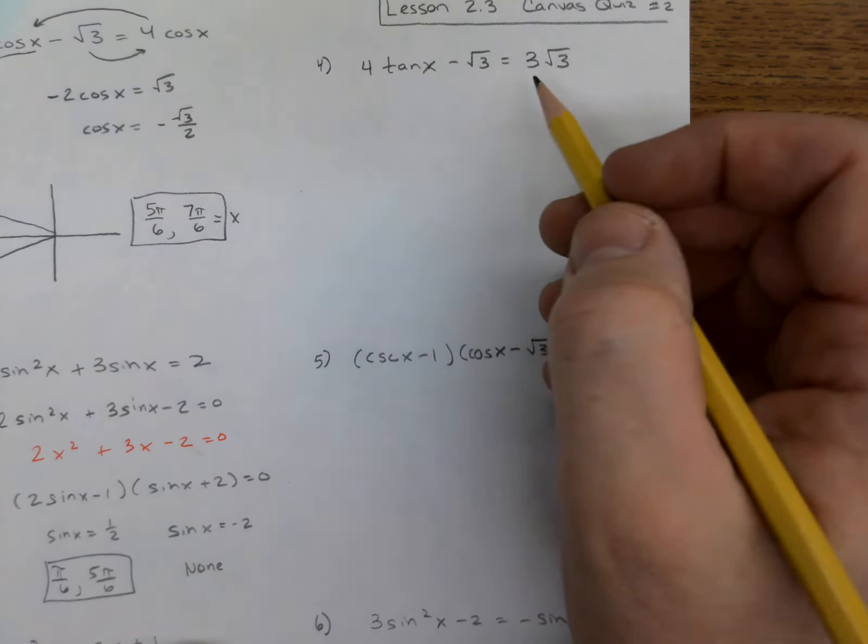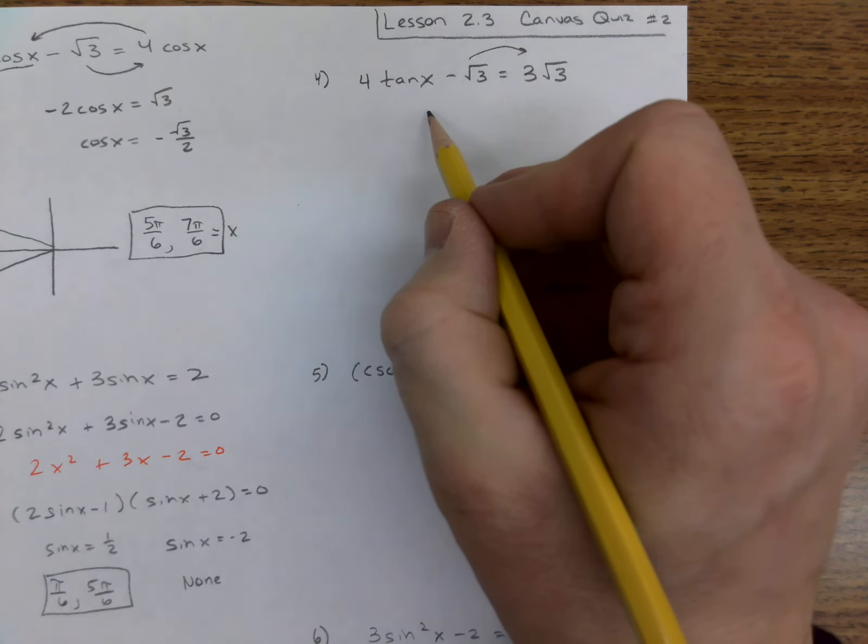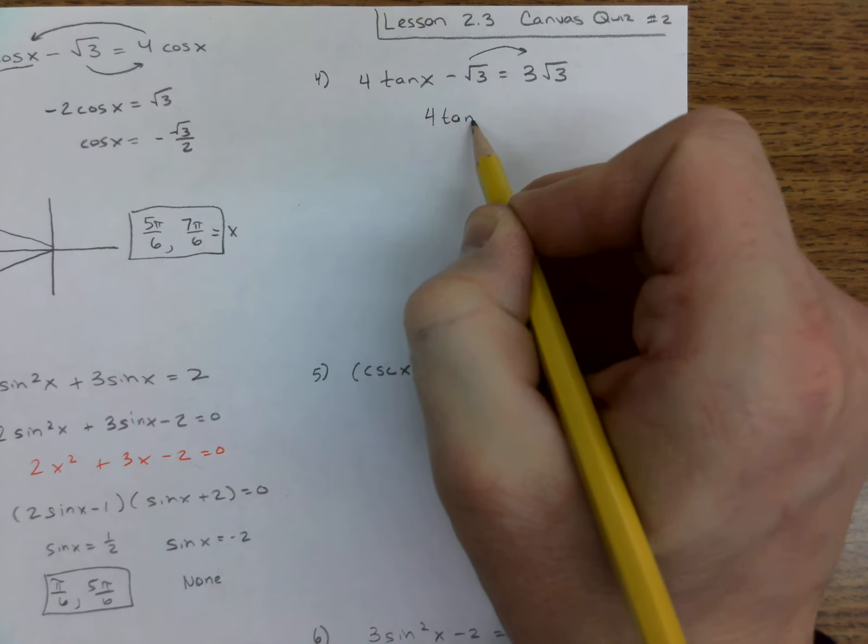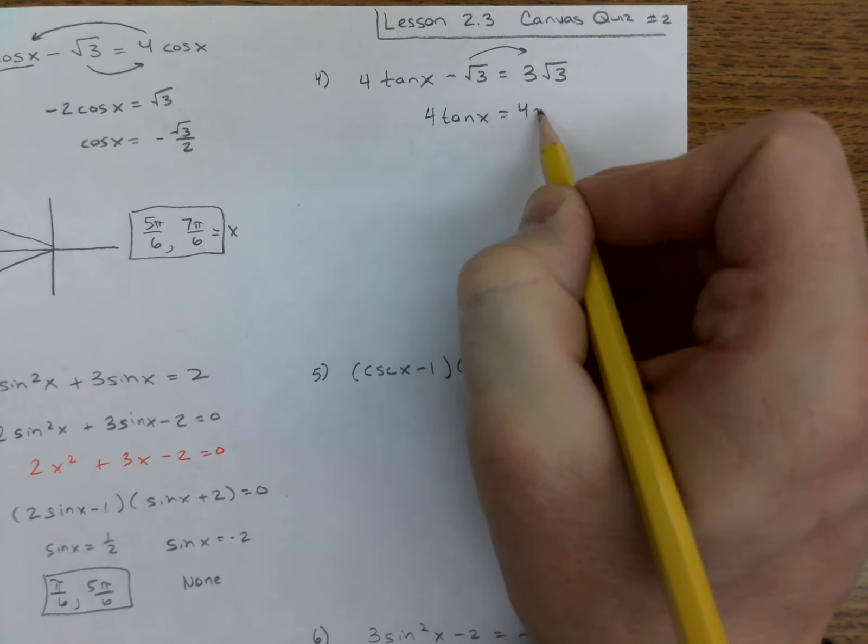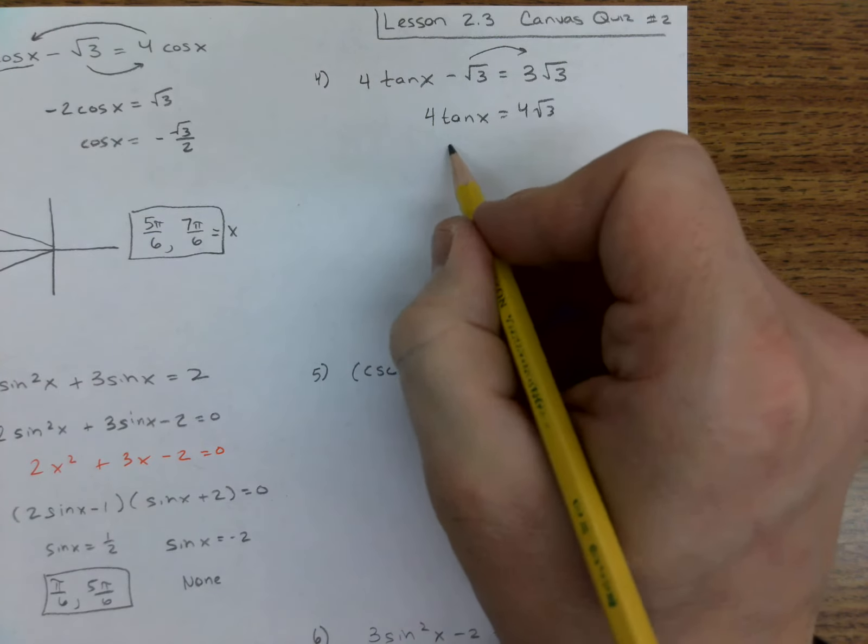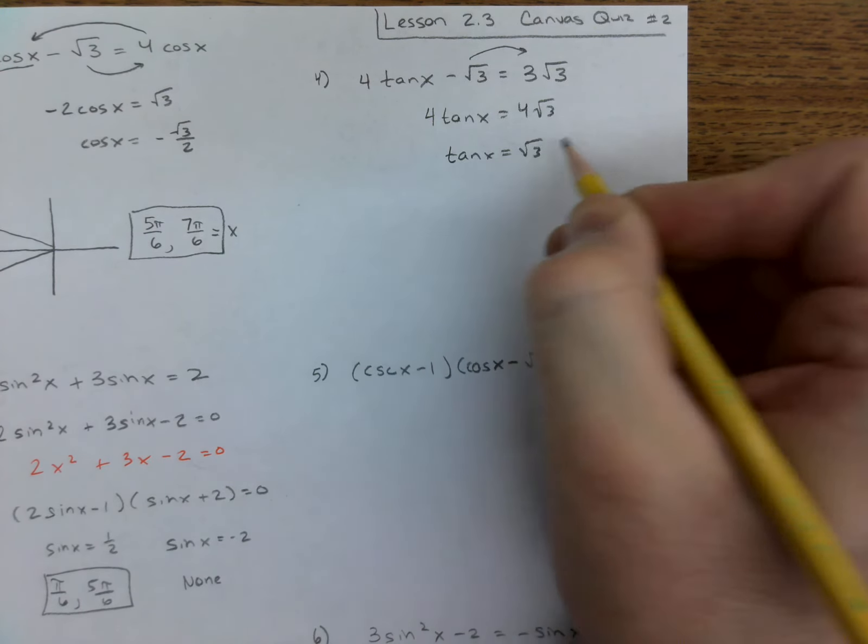Tangent. Well, let's isolate tangent. We put that over there, and that makes it 4 root 3. Divide by 4 and tangent of x is root 3.